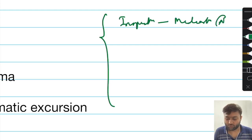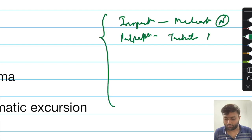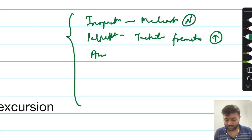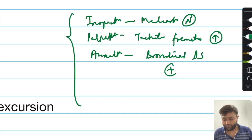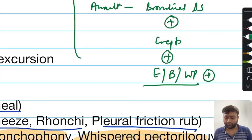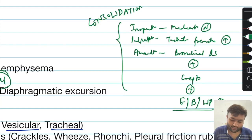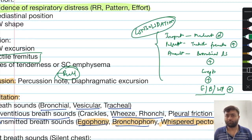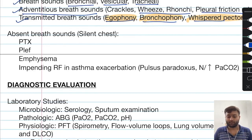The clinical importance of egophony, bronchophony, and whispered pectoriloquy together with a dull percussion note and increased tactile fremitus: if on inspection the mediastinum looks normal, on palpation tactile fremitus is increased, on auscultation you hear bronchial breath sounds along with creps, and egophony, bronchophony, and whispered pectoriloquy are all positive — this signals lung consolidation, which can be seen in pulmonary edema or pneumonia.